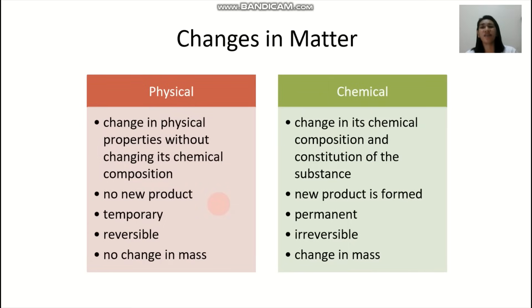Now changes in matter. I know you already knew this. Just an overview or recap. We have your physical and chemical changes. Physical changes are the changes in physical properties without changing its chemical composition. While in chemical, it's a change in its chemical composition and constitution of the substance. Physical change, no new product is formed. It's temporarily reversible and there is no change in mass.